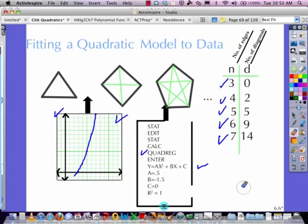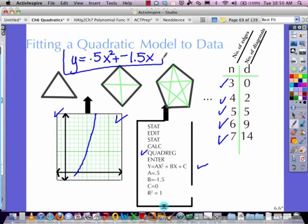I've got in this case an a value of 0.5, a b of -1.5, a c of zero, and then r² is 1. So that would mean we could now say our equation of y = 0.5x² + (-1.5x) + 0, so I don't even have to add that if I want, would have to be the model, the equation that represents this shape and diagonal situation.